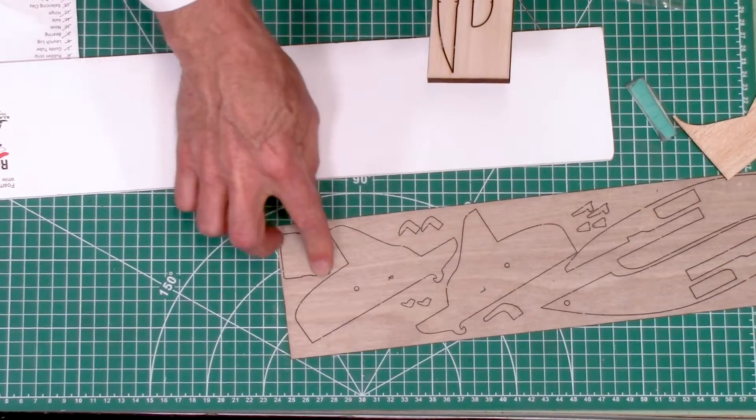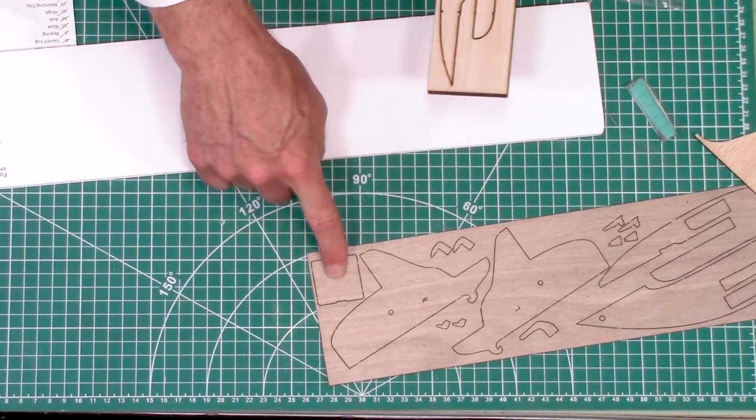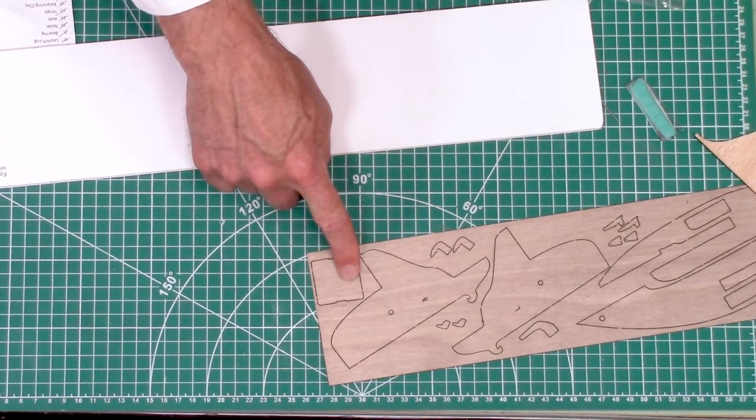This piece right here, it's a square piece. That's probably going to be where the RC components is going to be installed.